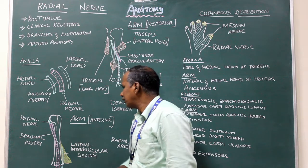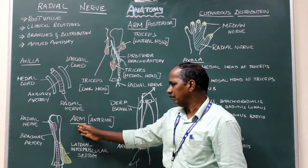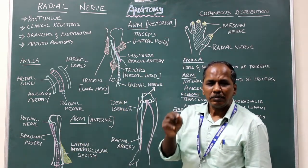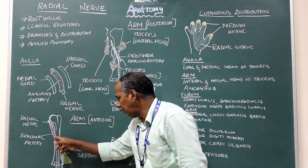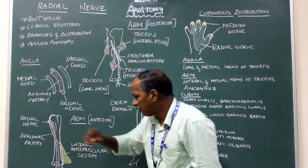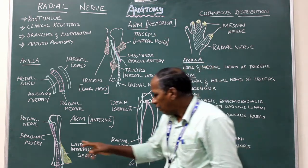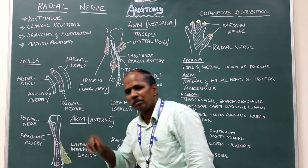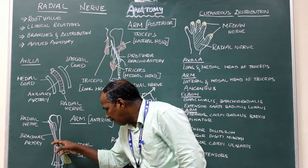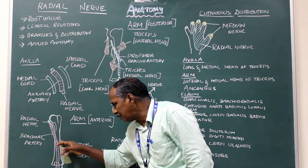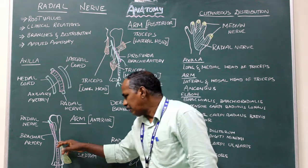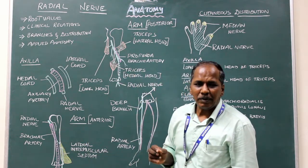In the upper part of the arm, it lies posterior to the brachial artery. In the middle of the arm, that is in the spiral groove, it runs from medial to laterally in the spiral groove, accompanied by the profunda brachial artery.